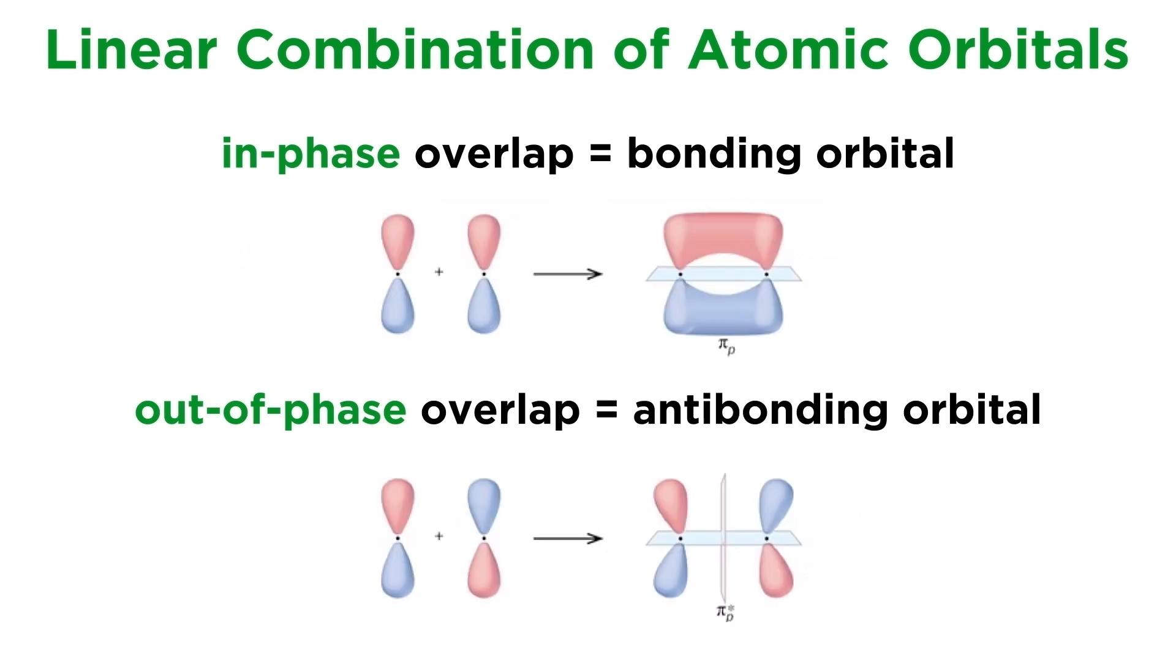If two p orbitals have lateral overlap rather than direct overlap, they generate pi orbitals. If they overlap in phase, it's the pi orbital, which is a bonding orbital. If they overlap out of phase, it's the pi star orbital, which is an antibonding orbital, and there is a node between nuclei, meaning electrons cannot be shared between them. The two electrons in the pi bond will inhabit the bonding orbital, and the antibonding orbital will be unoccupied in the ground state electron configuration.